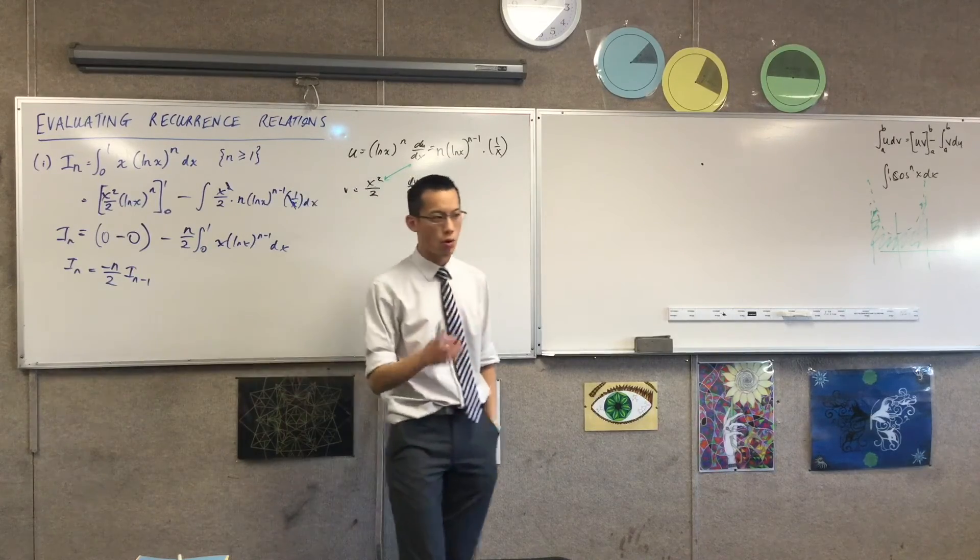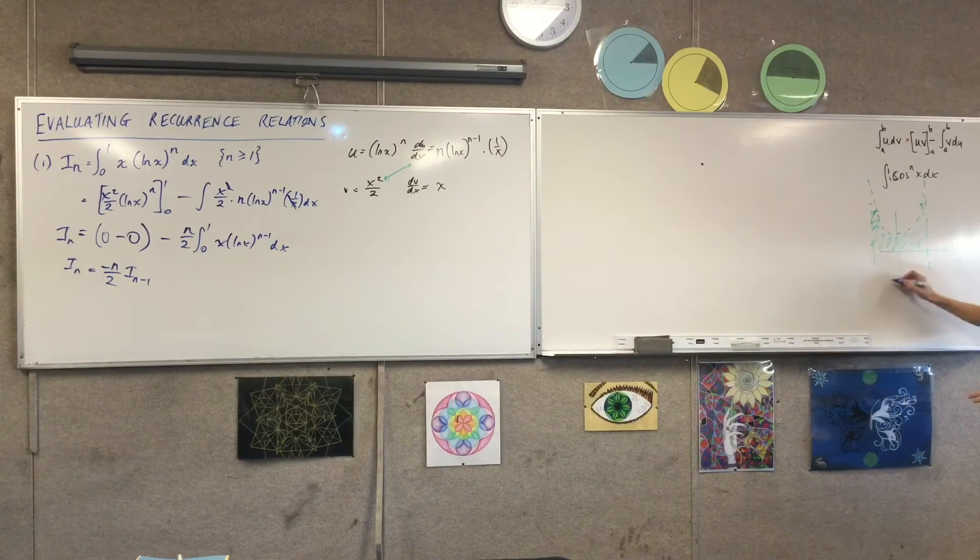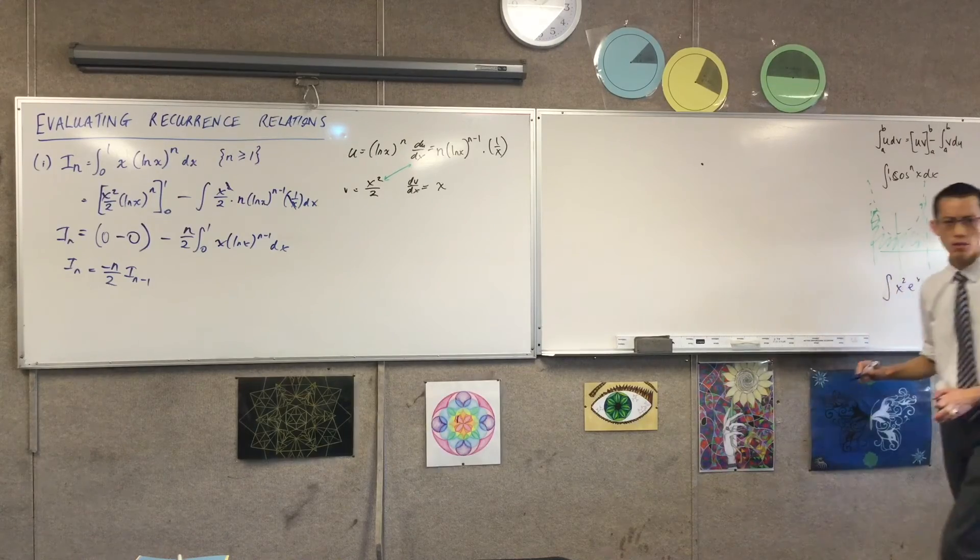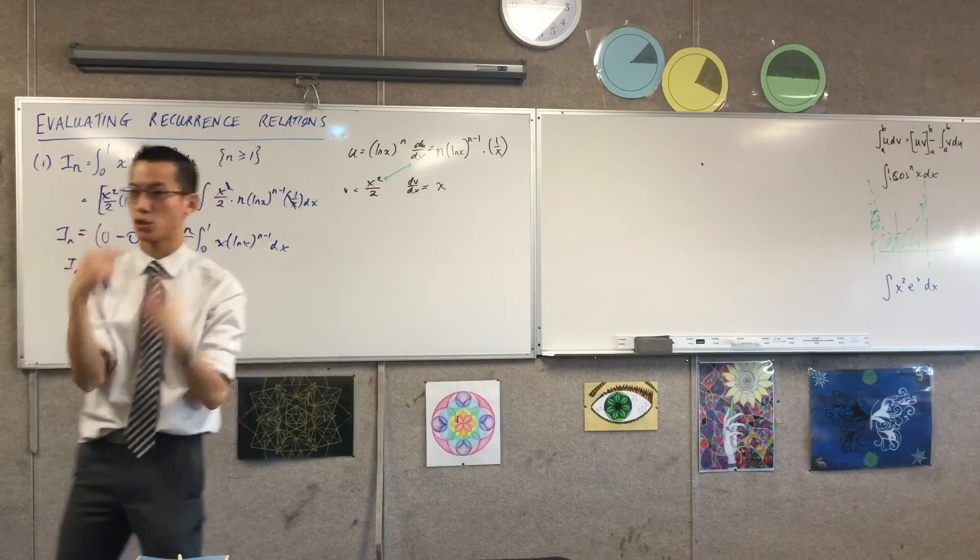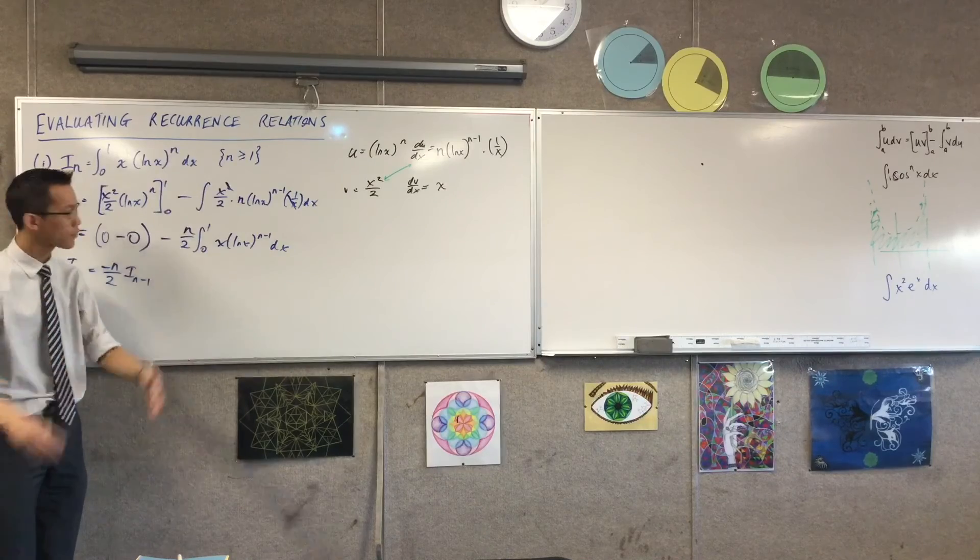So if you recall, I think the first example we started with, the very first one for recurrence relations, it might have been something like this. Do you remember this one? I think that was it. And then we looked at that, we actually evaluated it, we saw integration by parts happen twice, and then we thought, cool, now I can generalize. Now I can go power of n, and we did that.